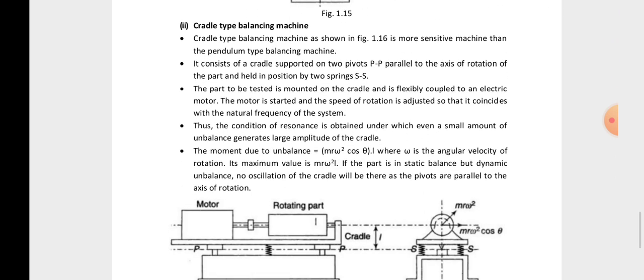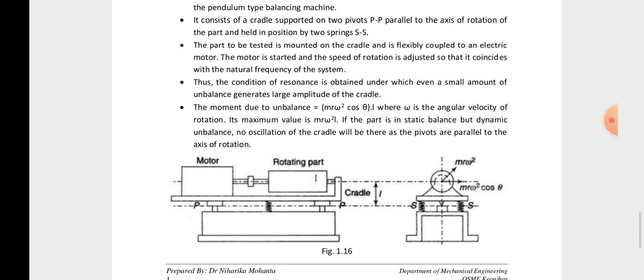The second type is the cradle type of balancing machine. Here, a motor is mounted on a spring or supporting base. There is a rotating part, and the cradle is the structure where the motor and the rotating part are rested. As the part rotates, forces act on it — that is, m·r·ω² — and the horizontal component is m·r·ω²·cosθ.